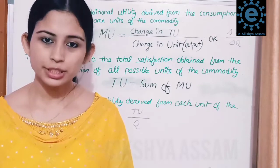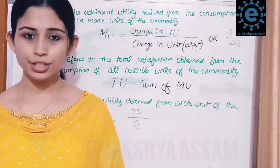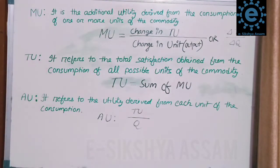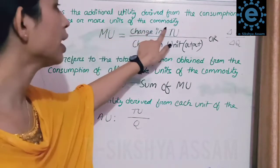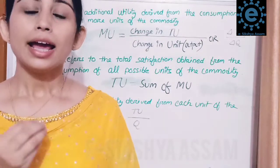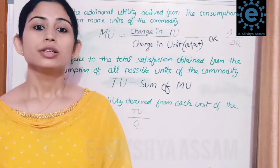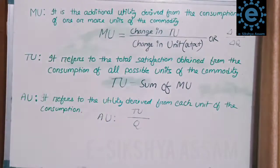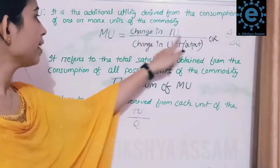Now, what is marginal utility? Marginal utility is the additional utility derived from the consumption of one or more units of a commodity. The formula is: MU equals change in total utility divided by change in units.